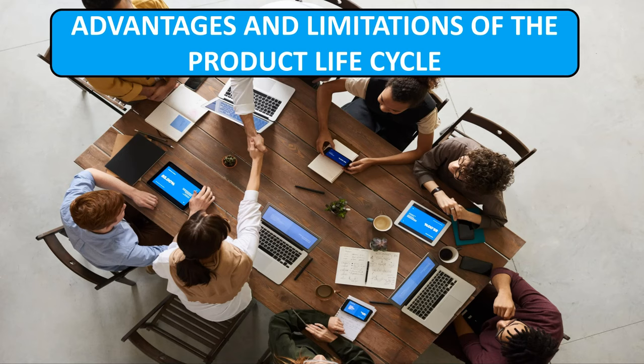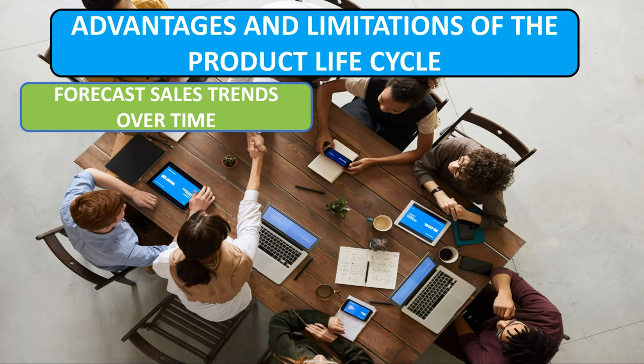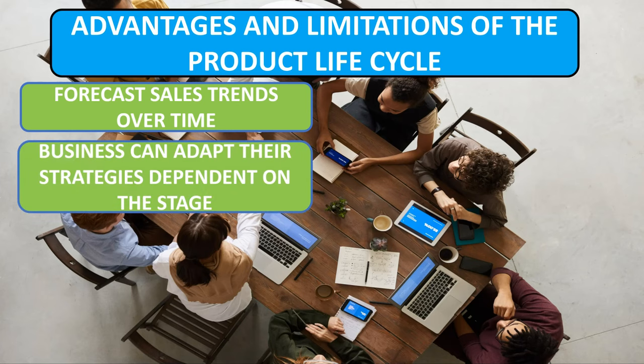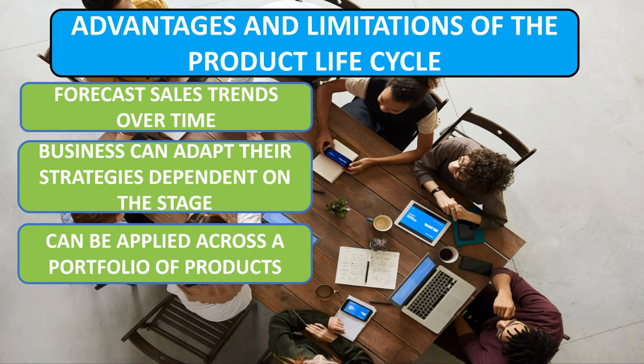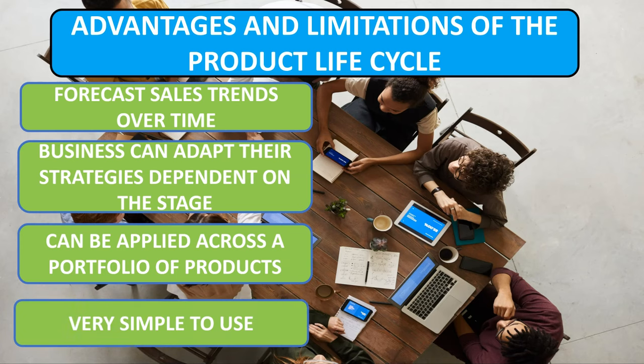To finish off, we'll look at a few key advantages and important limitations that should be considered when making business decisions using the product life cycle. First of all, the product life cycle helps the business to forecast sales trends over their lifetime. During a product's life, it allows the business to assess which stage the product is in, which helps them adapt their strategy to increase sales and minimise the likelihood of entering the decline stage. It also allows a business to view its whole product portfolio across the product life cycle, to assess where their next investment is best spent. And it is a very simple tool to use.